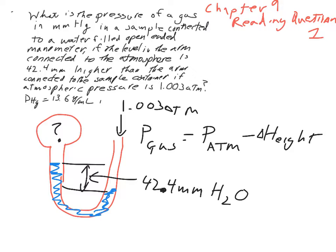We need to convert into units that we can work with. Since we're wanting to end up in millimeters of mercury, I'm going to convert everything to millimeters of mercury. We know that one atmosphere is 760 millimeters of mercury. So 760 times 1.003 gives us 762.28 millimeters of mercury.